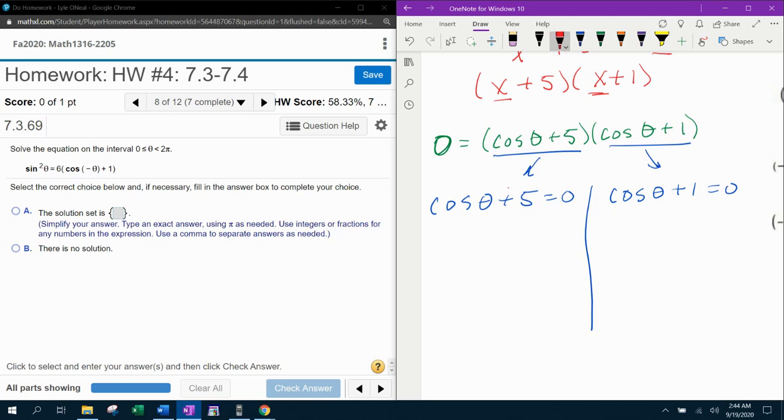So now for the first factor, if I move the five over, that's going to give me cosine theta equals negative five. Remember back when we graphed the cosine waves? When we graphed cosine, remember the range of values was from negative one to one. Negative five is not within that range of values. So this factor will not produce a solution.